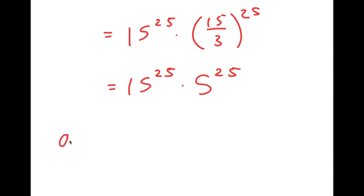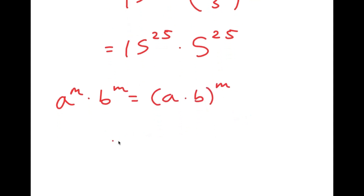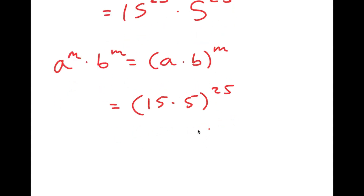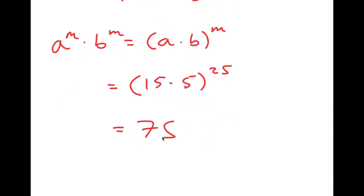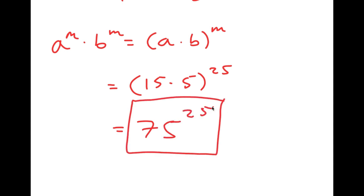Another property of exponents is that if I have a to the power of m times b to the power of m, this is going to equal a times b to the power of m. So this equals 15 times 5 to the power of 25, which is equal to 75 to the power of 25. So this is my answer.